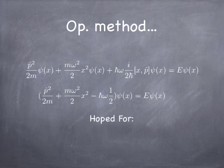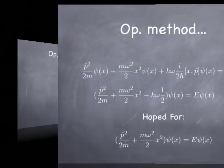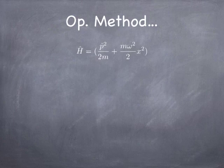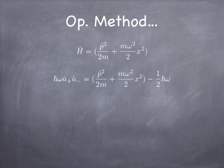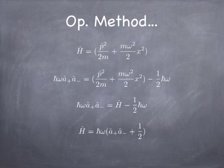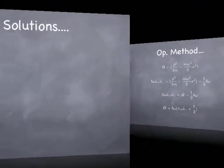I had hoped for just the kinetic energy and the potential energy, but all is not lost. If I write the Hamiltonian as kinetic plus potential and write out what I got with the two factors a-plus and a-minus, I just have this extra half ℏω. I can fix things up by simply adding a half ℏω to both sides, and I get a good expression for the Hamiltonian. It turns out to be the factored bit plus one-half ℏω.